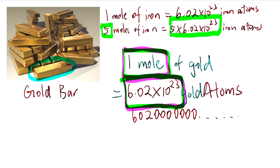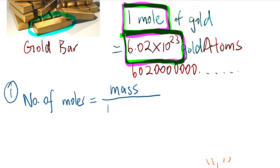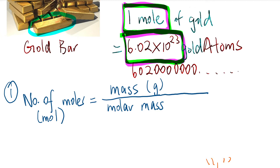For this topic there are two main formulas you need to know. The first one is: number of moles = mass ÷ molar mass. You'll be using this formula a lot in Form 4, Form 5, and Form 6. The unit for moles is mol, the unit for mass is grams, and molar mass is in grams per mole.